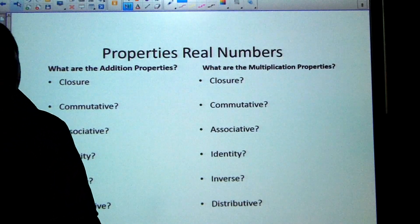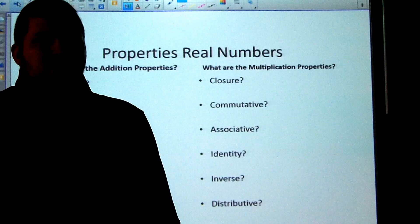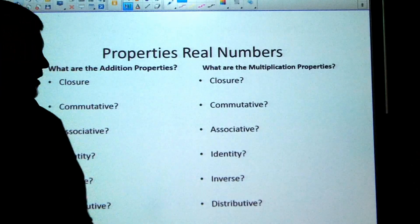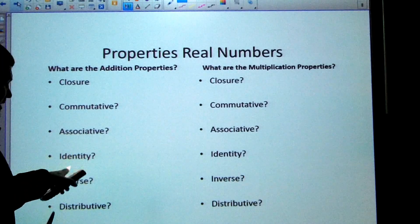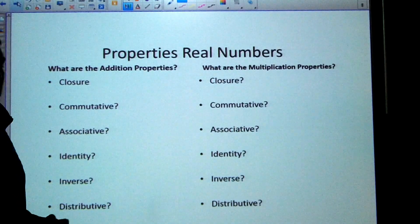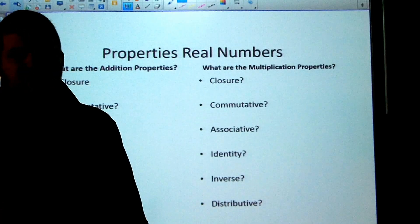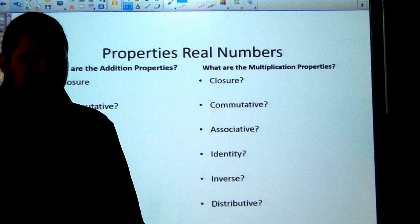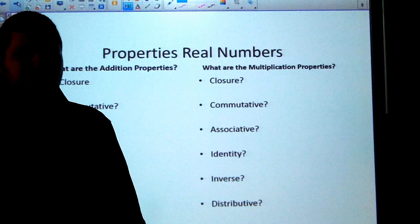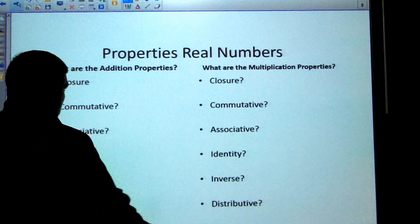All right, so we have a couple properties that we have used over and over again throughout our mathematical careers that we probably have taken advantage of. These properties are called the closure, commutative, associative, identity, inverse, and distributive property. And these properties work for both addition and multiplication.